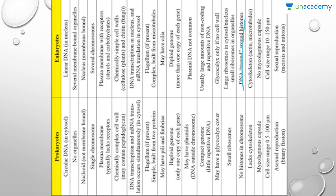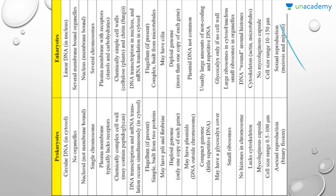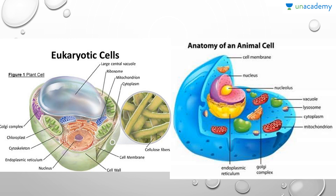Prokaryotes lack a cytoskeleton, whereas eukaryotes have a cytoskeleton composed of actin and microtubules. Prokaryotes may have a glycocalyx capsule; in eukaryotes glycocalyx is only present if the cell wall is absent. Cell size in prokaryotes is 0.5 to 100 micrometers; in eukaryotes it is 10 to 150 micrometers. Prokaryotes always undergo asexual reproduction or binary fission, whereas in eukaryotes sexual reproduction takes place through meiosis and mitosis.